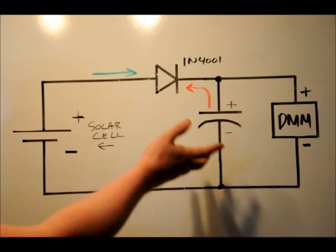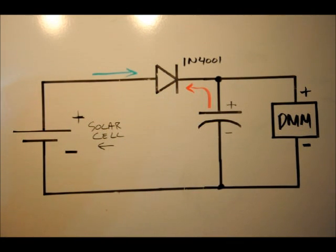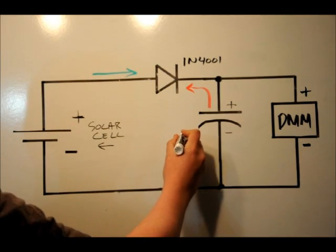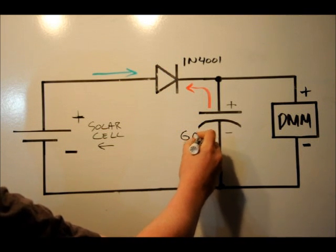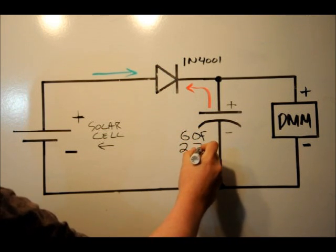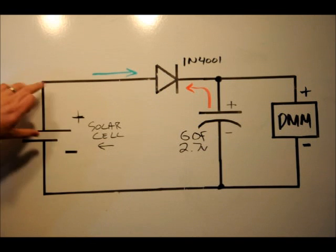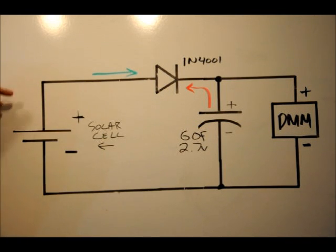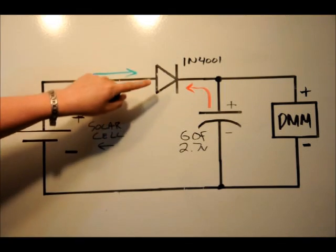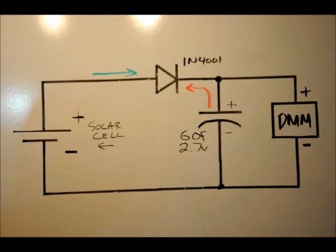A supercapacitor is rated for anywhere from 2.5 volts to 5.4 volts. Typical larger capacitors are rated for 2.5 to 2.7 volts. So let's say that this is a 60 farad, 2.7 volt bank. Typically, you'd want to have a solar cell that has a rated voltage for say 3.3 volts to charge this, because there's going to be a drop of about 0.7 volts along the diode.